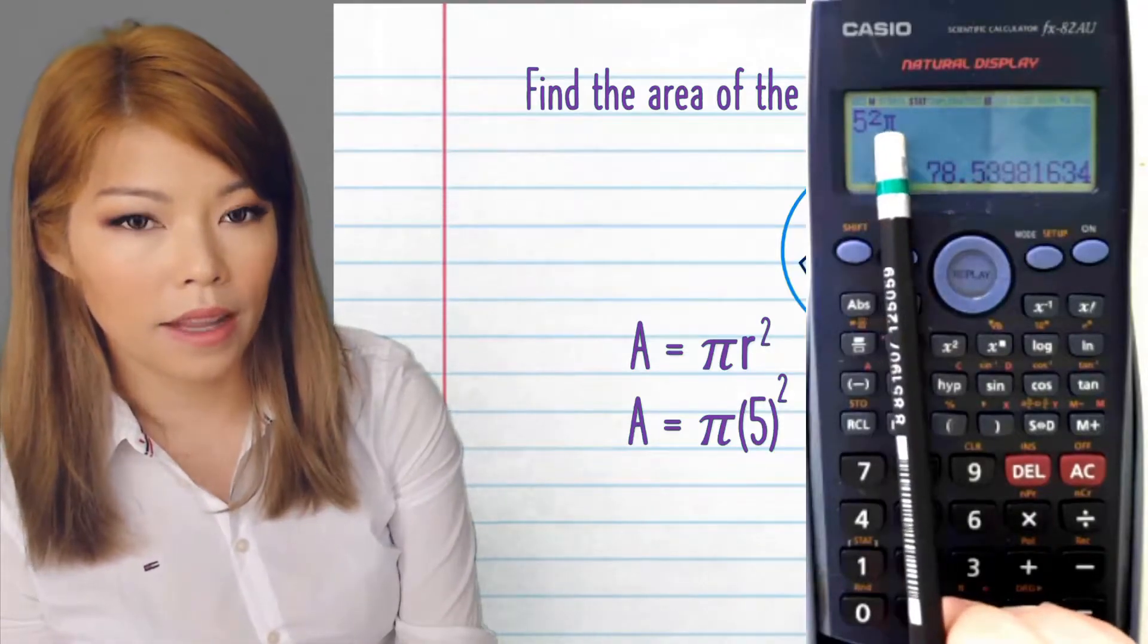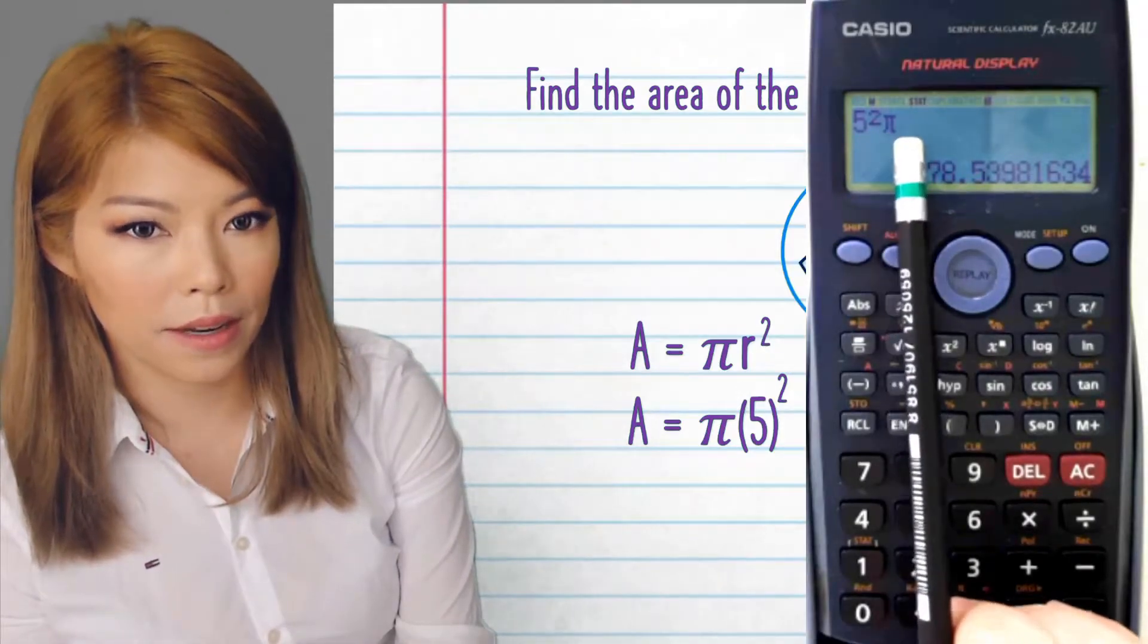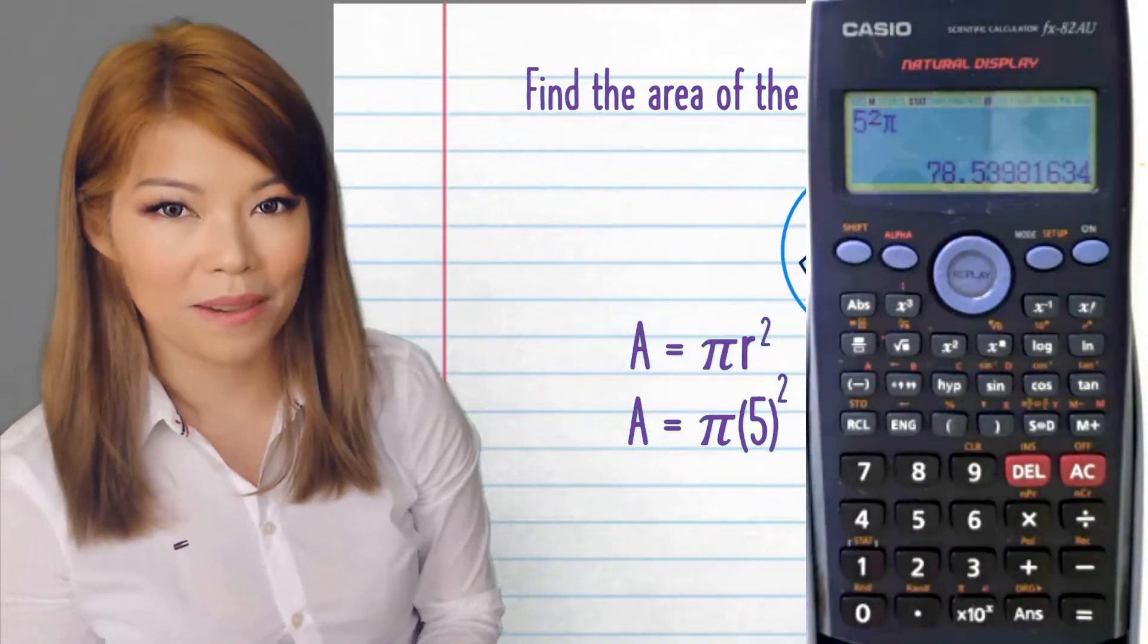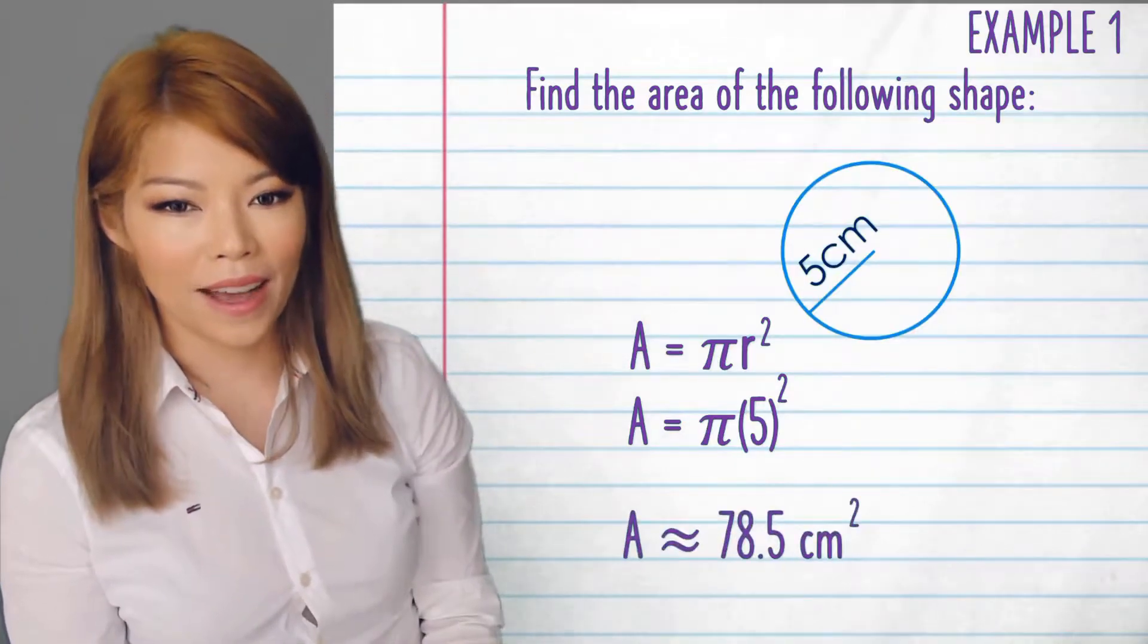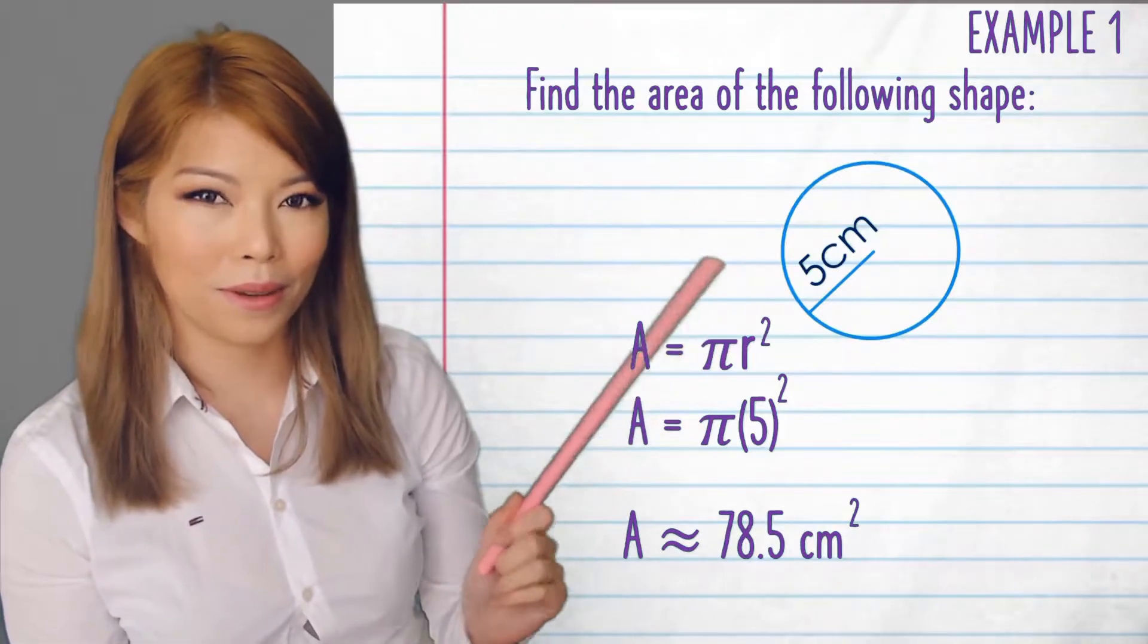But if you put pi, then you need the times and then the number. Just bear that in mind. So let's write that down. 78.5 centimeters squared. Don't forget the units.